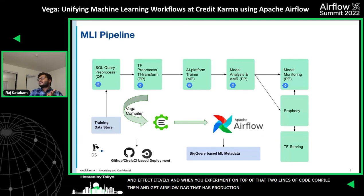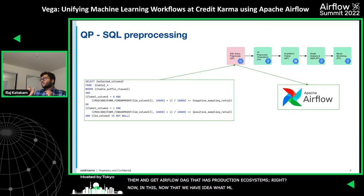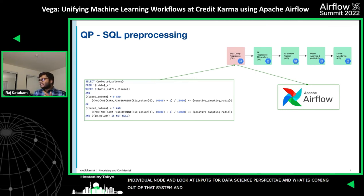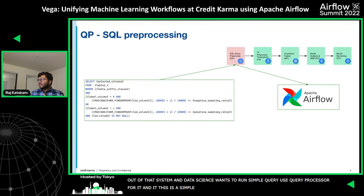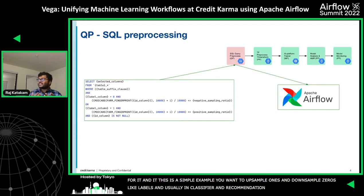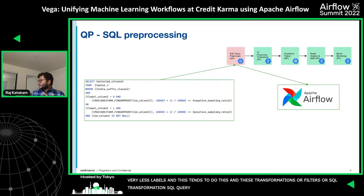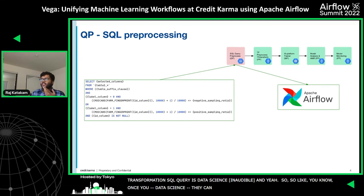In this slide, if a data scientist wants to run a simple query, they use Query Processor. Here is a simple example where you would want to up-sample ones and down-sample zeros — the labels in classifier and recommendation system use cases usually have very few positive labels, so data science typically does this kind of balancing. These kinds of transformations, any filters, any SQL-kind transformations — the SQL Query Processor is what data science leverages. Once data science is okay with it, with one or two lines you get an Airflow DAG.